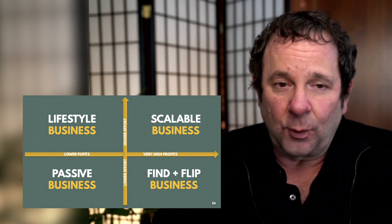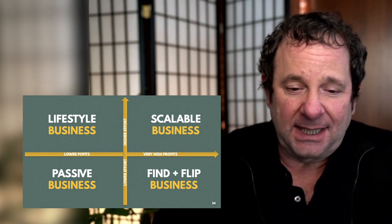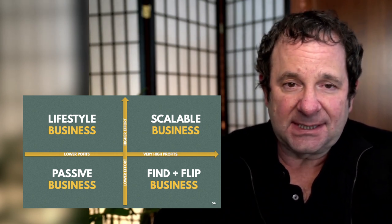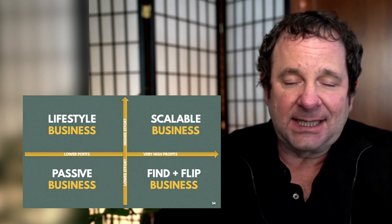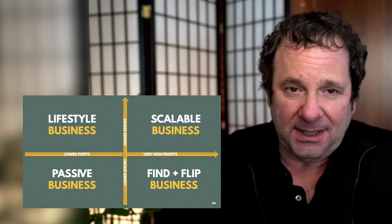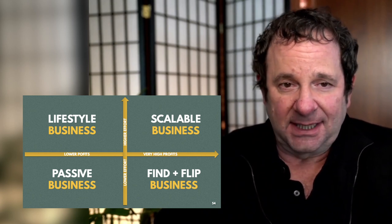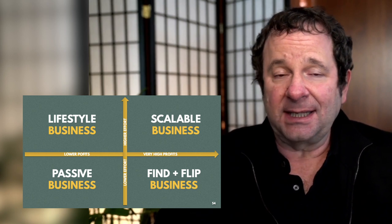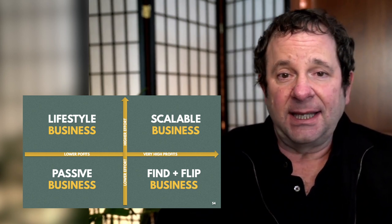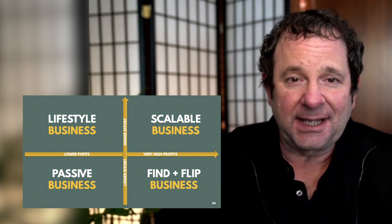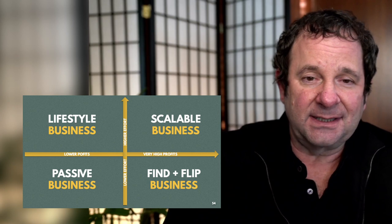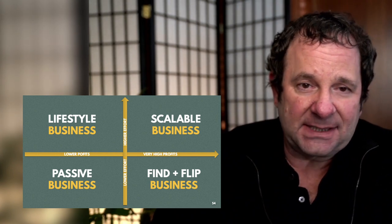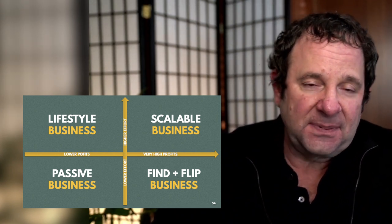That allows us to create a quadrant with four different types of companies. Down in the lower left quadrant is the passive business. A passive business is one where you don't have to do anything at all — it is very low effort because it's just earning money and nothing has to be done to it. Because it's passive, you'll have more expenses since you have people running it, so labor costs are going to be higher. You don't get the benefit of your own labor because you've got a third person running it. Those typically will have lower profits.